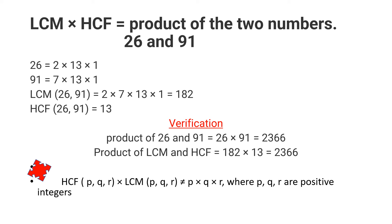The next result is that LCM multiplied by HCF equals the product of the two numbers. Be cautious — this is true only for two numbers; when we have three numbers, this result will not hold. Let us verify this for 26 and 91: LCM is 182 and HCF is 13. LCM × HCF = 2366, and the product of 26 and 91 is also 2366, which verifies the result.